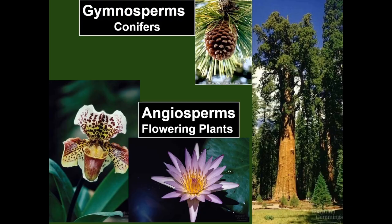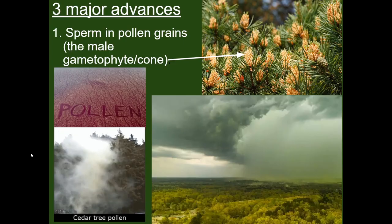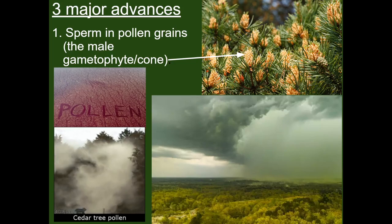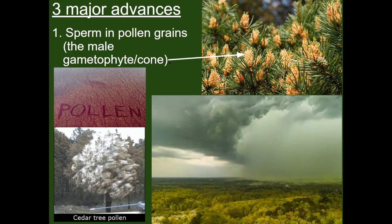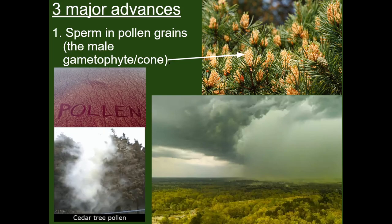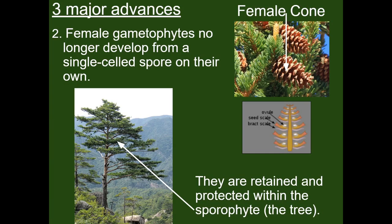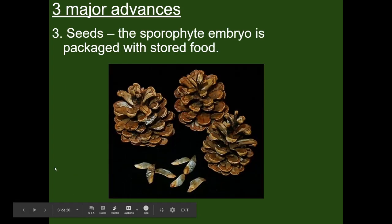Gymnosperms and angiosperms are going to add three new adaptations to flourish on land. First, they are no longer going to rely on water to transport their gametes. Instead, sperm is transferred in a secure structure called pollen. Second, gametophytes are no longer going to develop from a single spore — they grow on the sporophyte structure. In this way, these plants are able to provide nutrients and resources needed for our next adaptation. Third, these plants have seeds.